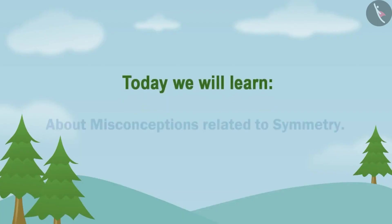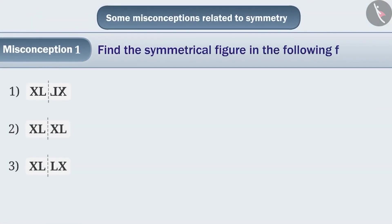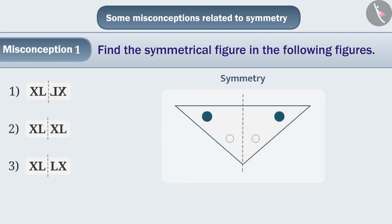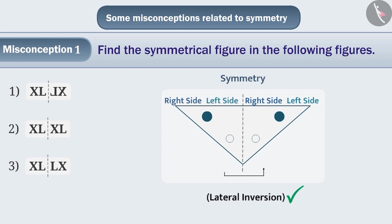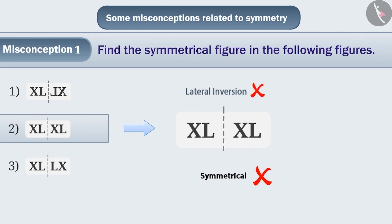Today we will learn about misconceptions related to symmetry. Misconception 1: Find the symmetrical figure in the following figures. Children do not understand symmetry correctly. They do not understand that two such parts of symmetrical shapes can be made that they meet each other perfectly. By considering the dotted line as a mirror line, they do not see whether the shape of the figure is properly presented in the mirror following lateral inversion. Option 2 has the same shape on both sides, so they think it is a symmetrical shape. But this is a wrong understanding because the lateral inversion of the shape is not clear here. Hence, it is not a symmetrical shape.